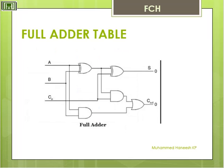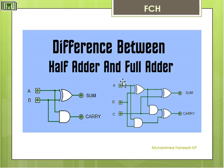So this is about the Full Adder. This is the Full Adder circuit. We have A, B, C, 3 inputs, then we have one Sum and one Carry. Here is the difference between Half Adder and Full Adder: Half Adder has 2 inputs and 2 outputs; Full Adder has 3 inputs and 2 outputs.